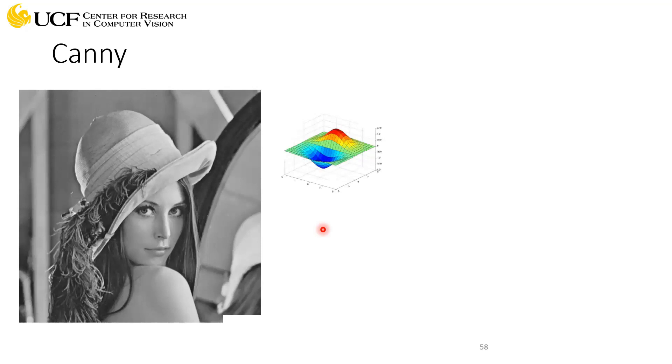Now this is like your input image, and this is the first order derivative of a Gaussian filter. Again, this is just visualization of the smooth filter which will look something like this when you look from the top.